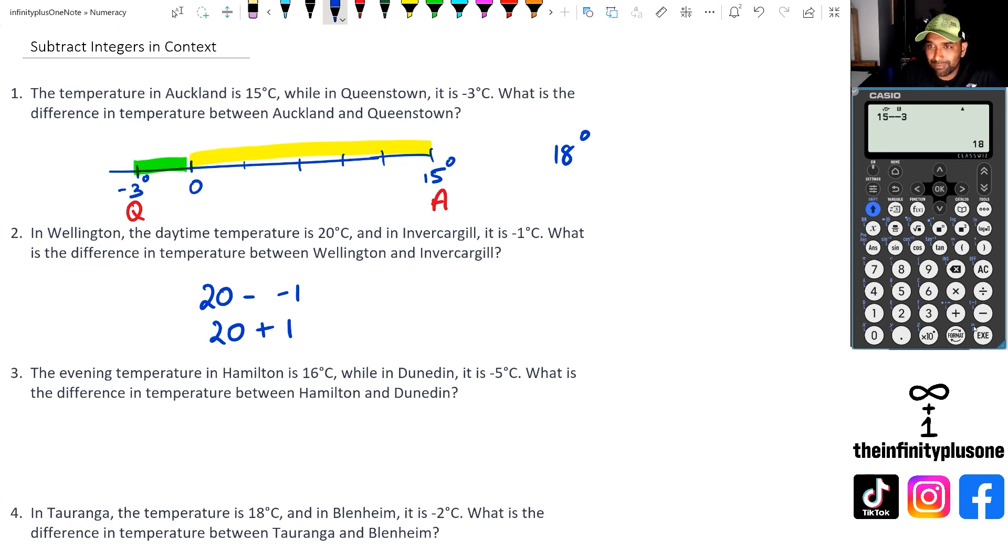Just something to be mindful of. So now in this case, we've got 20 plus 1, which means we're going to get 21 degrees as the difference. Now, if I was to do this in the calculator, I would go 20 take away negative 1. As you can see, that's going to be positive 21.